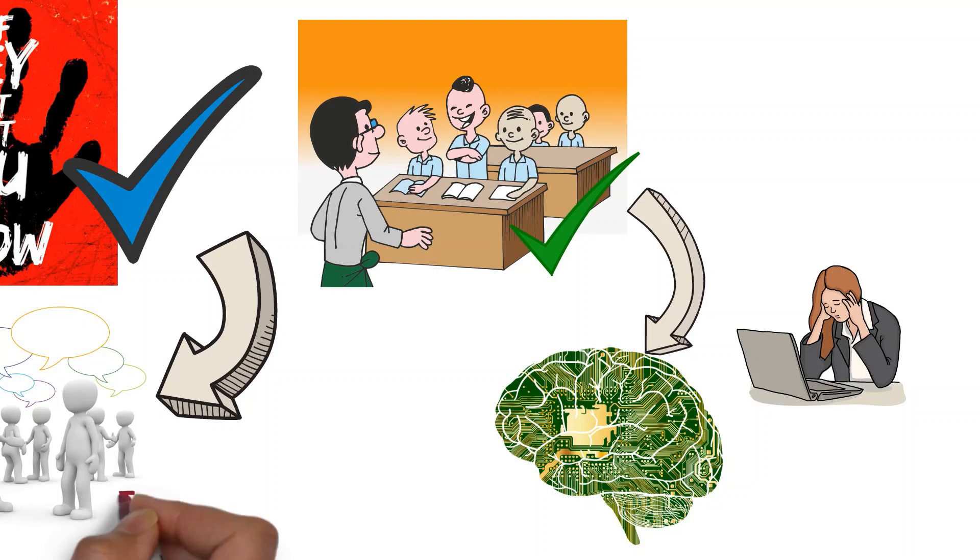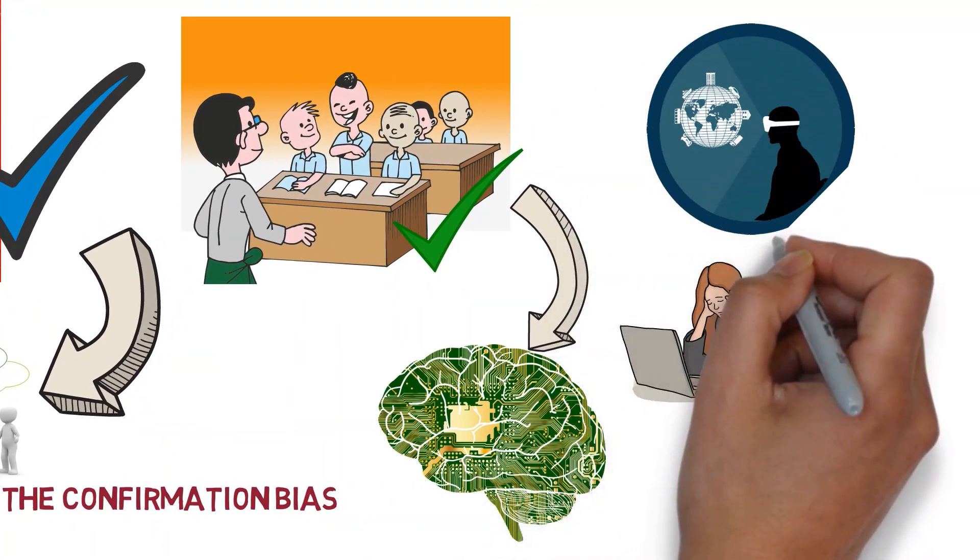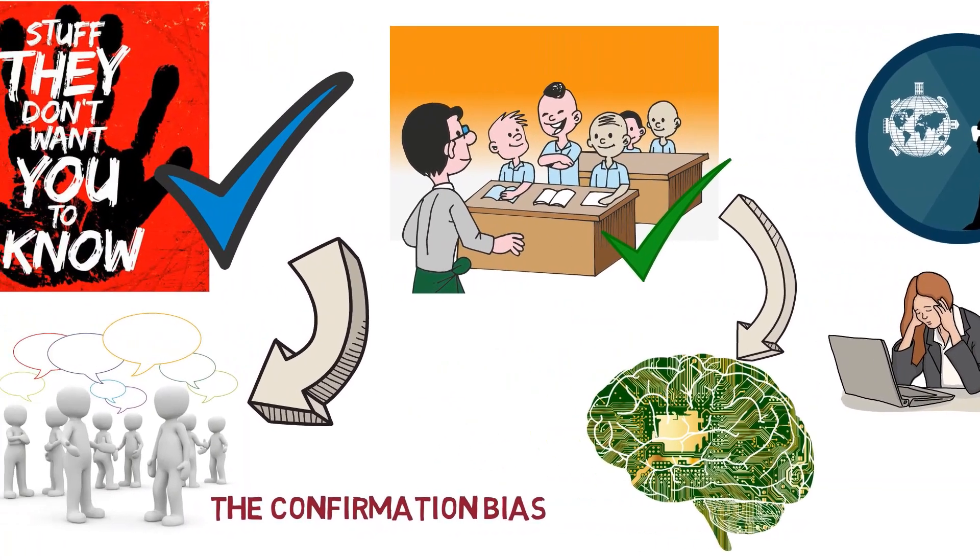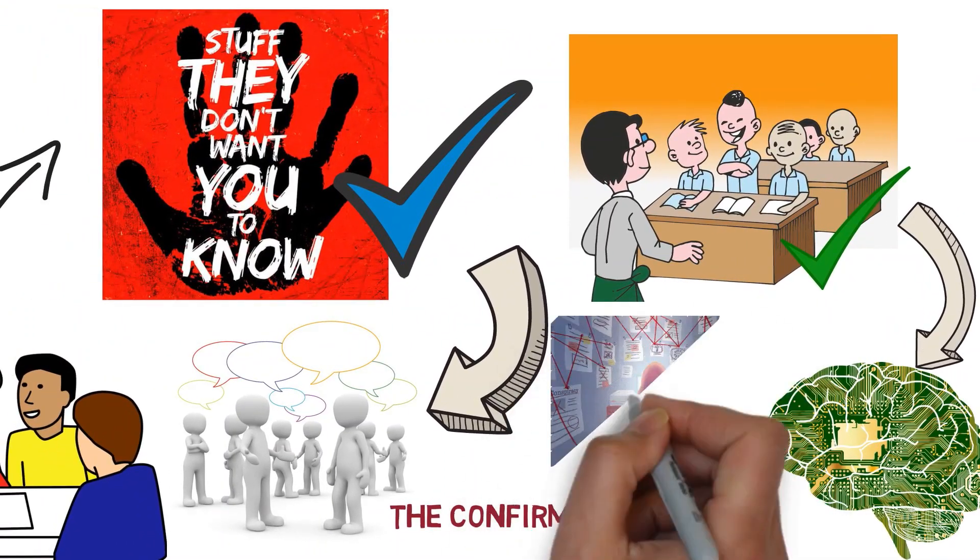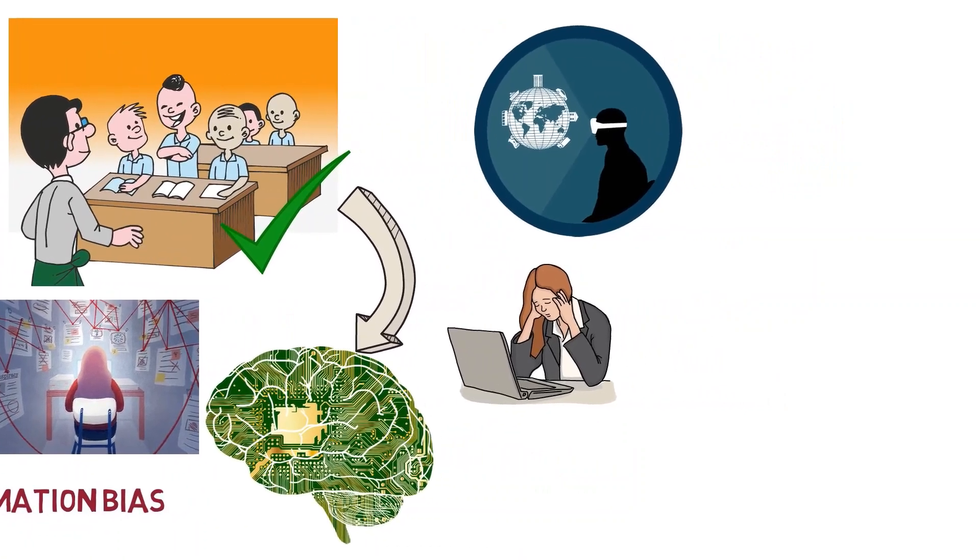The confirmation bias can also play a role in the development of conspiracy belief. People are naturally inclined to seek out information that confirms their existing beliefs. So, when they run across a theory that supports something they already think is true, they are more likely to believe the information is also true.